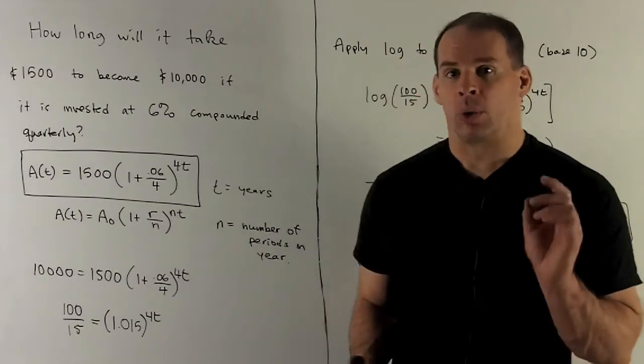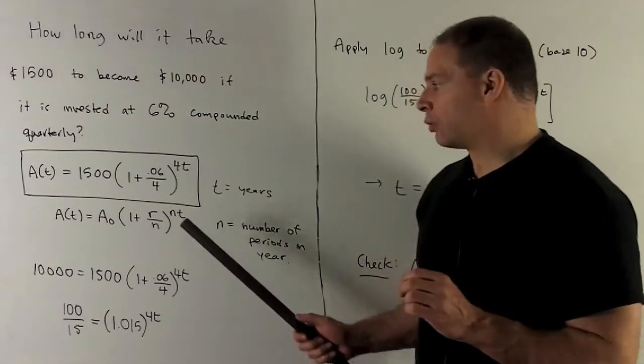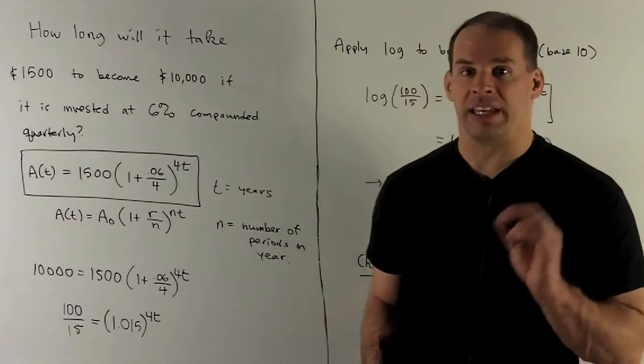So we're where n is the number of times that you compound per year, raised to the nt, where t is in years.